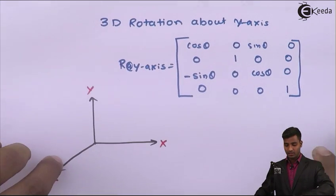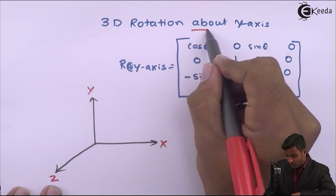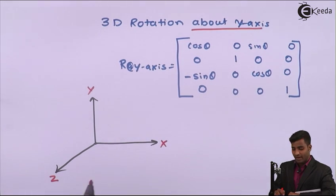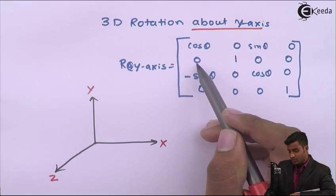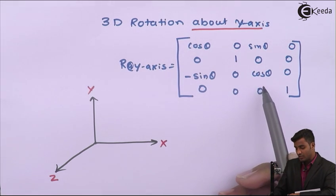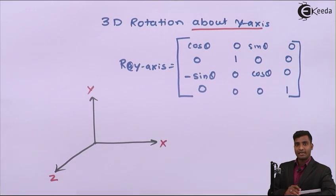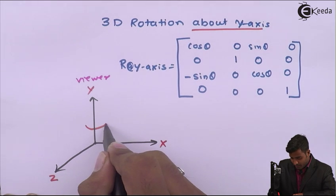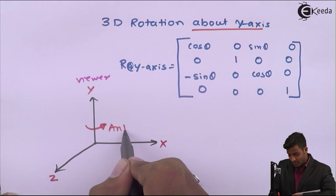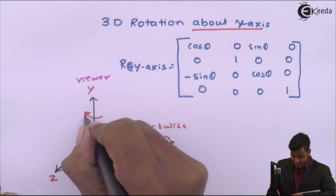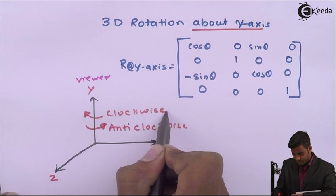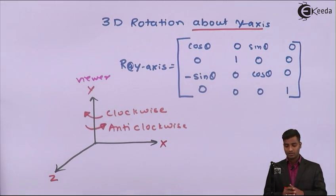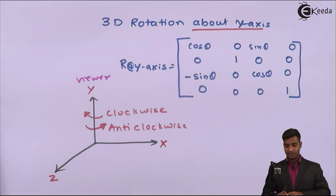Next is rotation about the Y axis. The standard matrix for rotation about the Y axis is: [cos θ, 0, sin θ, 0 / 0, 1, 0, 0 / -sin θ, 0, cos θ, 0 / 0, 0, 0, 1]. If you are rotating in one direction it is anticlockwise (also called counterclockwise), and the other direction is clockwise. The sign convention holds: positive angle produces anticlockwise rotation and negative angle produces clockwise rotation.